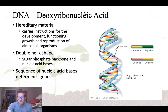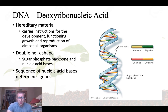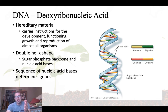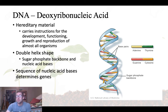DNA has a double helix shape with a sugar-phosphate backbone. Between the two backbones are nucleic acid bases: adenine, thymine, guanine, and cytosine. It is the sequence of these bases that ultimately determines what the gene is and what the trait is going to be.